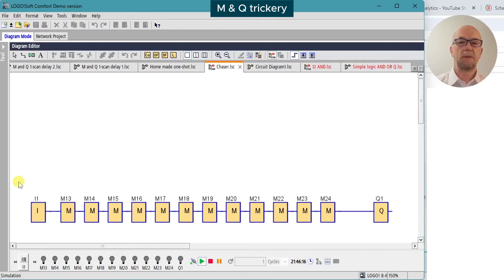In this example, we've simply got input 1 feeding through M13 to M24 and turning on Q1. We're expecting that when input 1 turns on, Q1 will turn on immediately at the end of the scan, but observe the marker simulations down here.